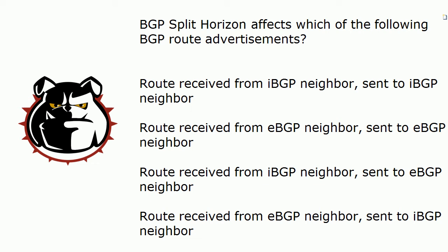Is it A, a route received from an internal neighbor and then sent to another internal neighbor? B, a route received from an external neighbor and sent to another external neighbor? C, a route received from an internal neighbor and then sent to an external neighbor? Or D, a route received from an external neighbor and sent to an internal neighbor?